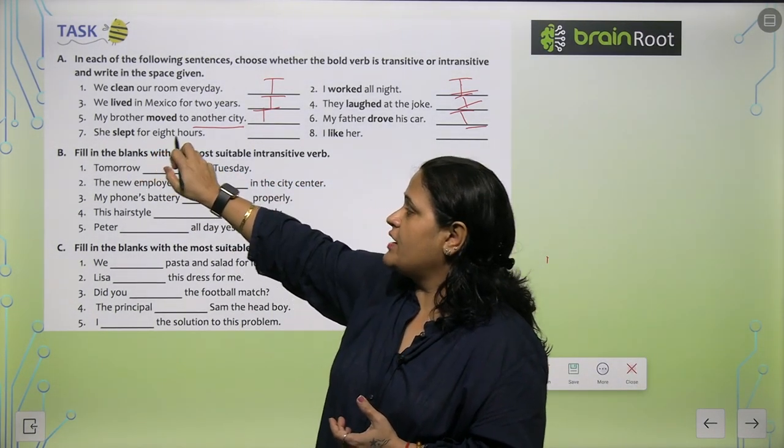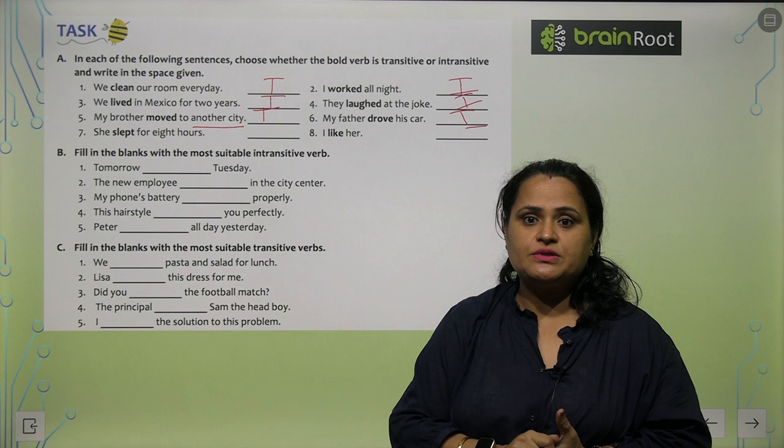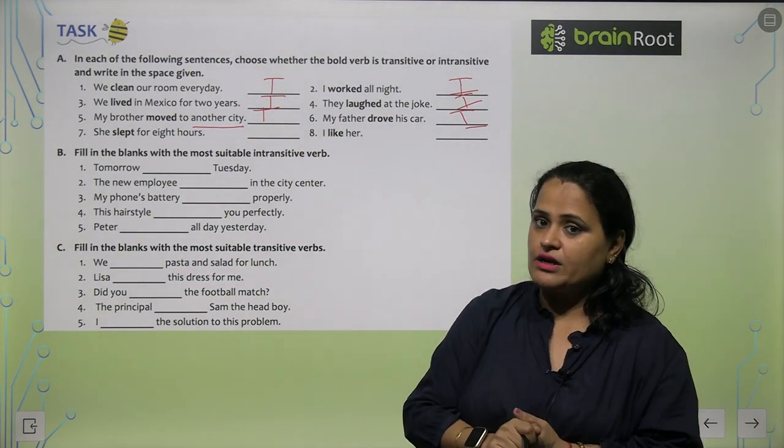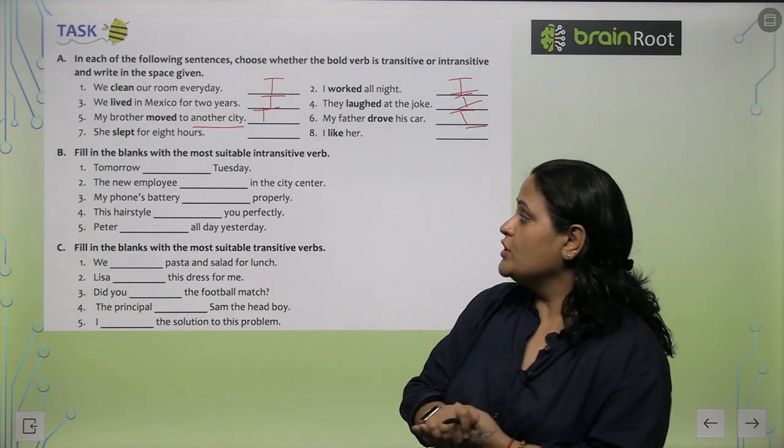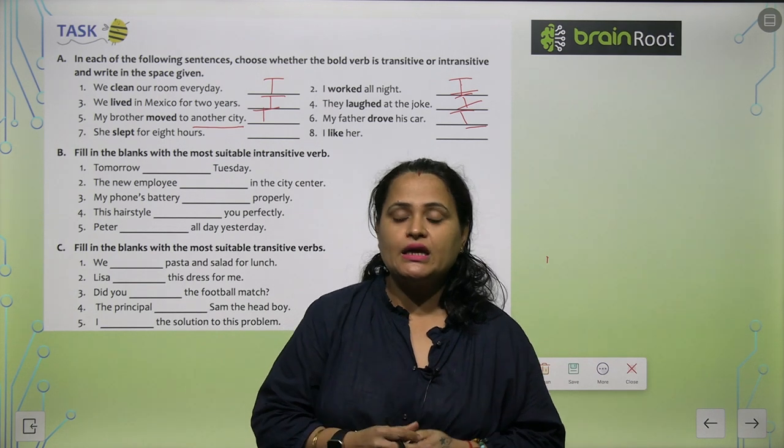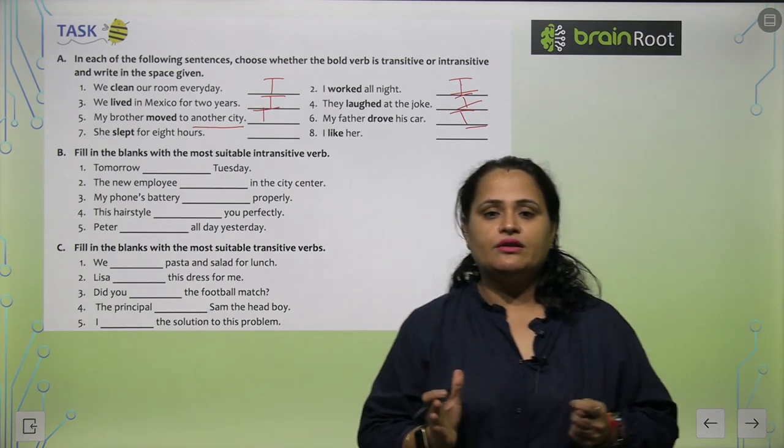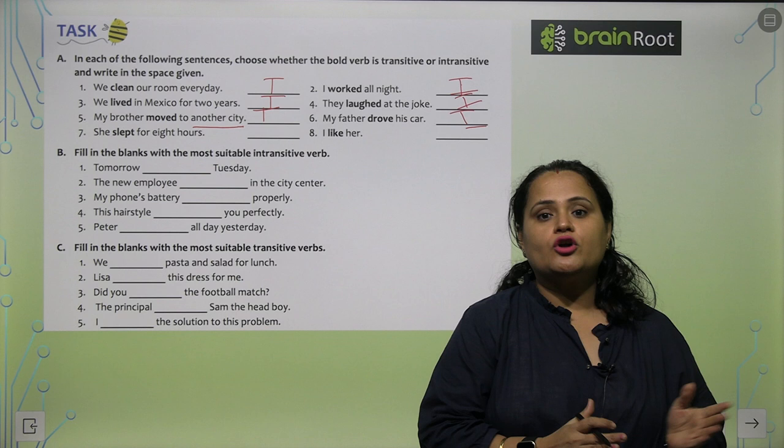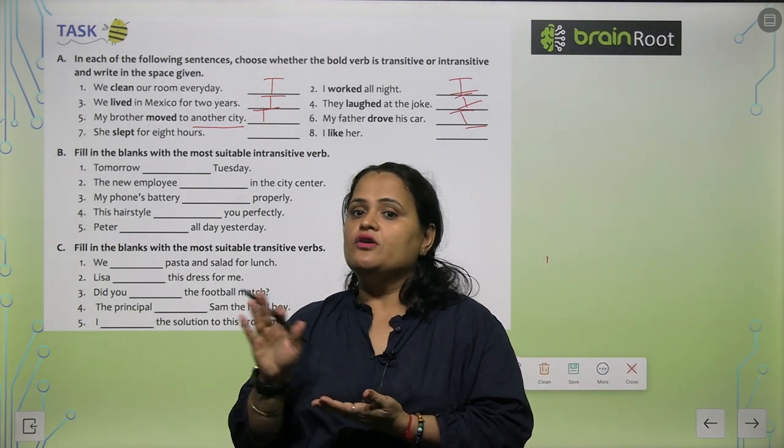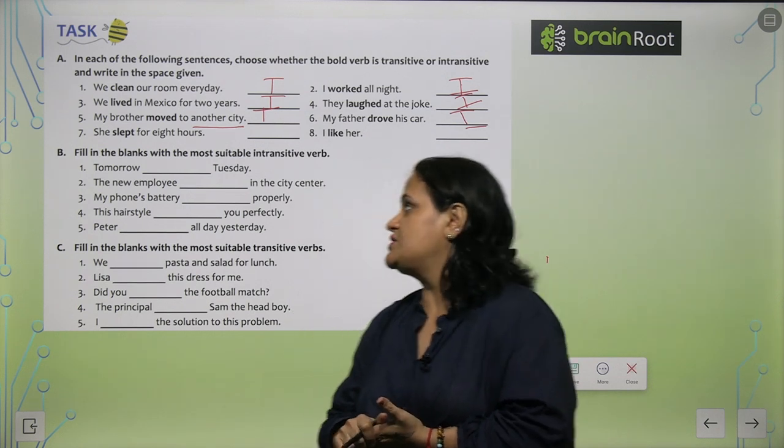My father drove what? His car. My father drove his car. Yaha par iska answer aapko mil raha hai what ka, so this is transitive verb. She slept for eight hours. She slept what? Koi answer nahi hai yaha par what ka. Whom? Koi bhi answer nahi hai. Jo bhi sentence what or whom ka answer aapko de rahe hai they will come in the category of transitive verb, aur jo nahi de rahe hai that means they do not need any object so they will become intransitive verb.